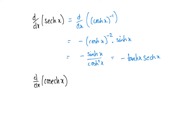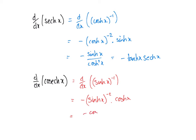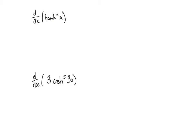The same sort of thing applies for differentiating csch x. We can write that as the differential of sinh x to the power of negative one. Using the chain rule, we multiply by the power minus one, reduce the power by one to get sinh x to the power of negative two, then multiply by the differential of sinh x which is cosh x. So we get minus cosh x over sinh squared x, which we can write as minus csch x times cosh x.